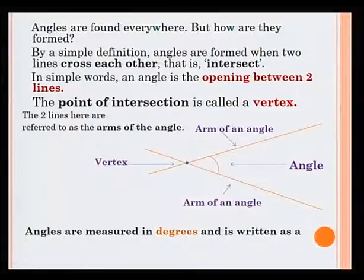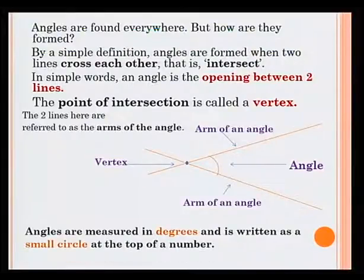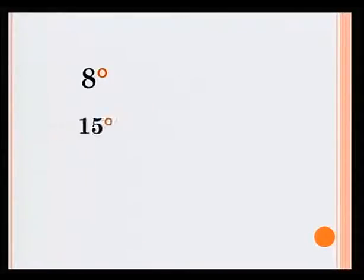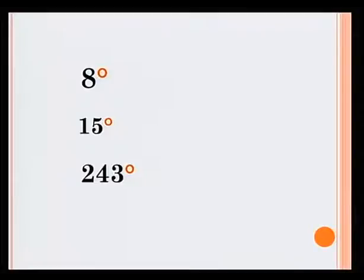Angles are measured in degrees and is written as a small circle at the top of a number. For example, 8 degrees, 15 degrees, 243 degrees.